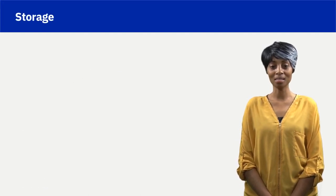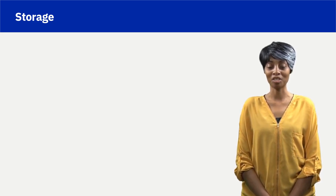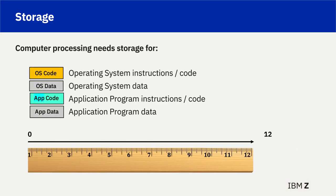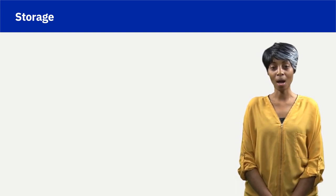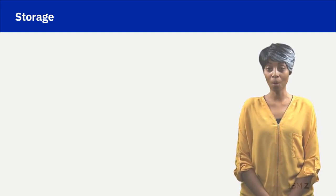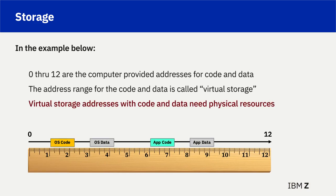The operating system consists of program instructions and data. An application program consists of program instructions and data. Computer hardware provides a contiguous range of addresses to store instruction code and data that belong to the operating system and application programs. The address range for operating system and application program code and data is a virtual address range.